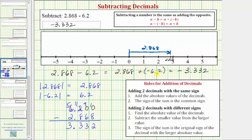And then because we're adding negative 6.2 or subtracting positive 6.2 from here we would move left 6.2 units.